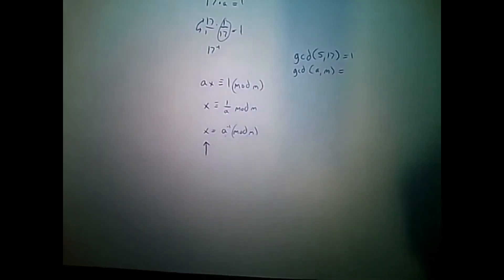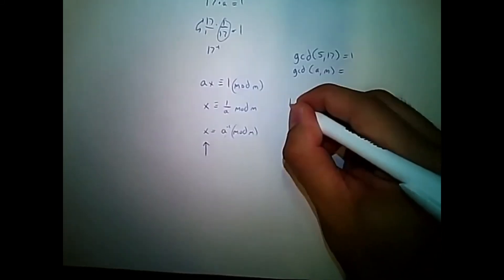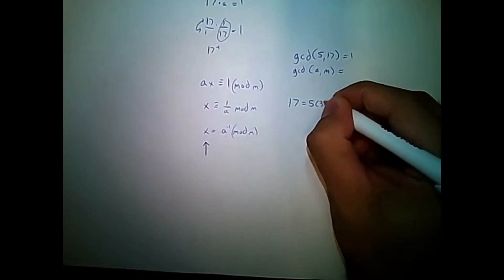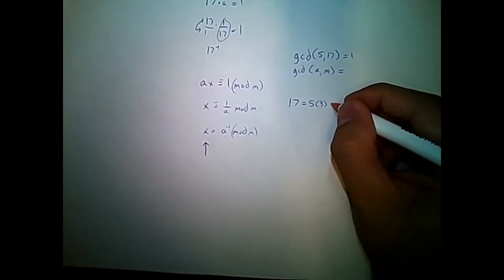First, we'll find the GCD using Euclid's algorithm. And if we find it's not 1, then we can stop and say there's no multiplicative inverse. So, let's go ahead and perform that step. We're getting good at Euclid's now. 17 is equal to 5 times 3. That's 15 plus 2.